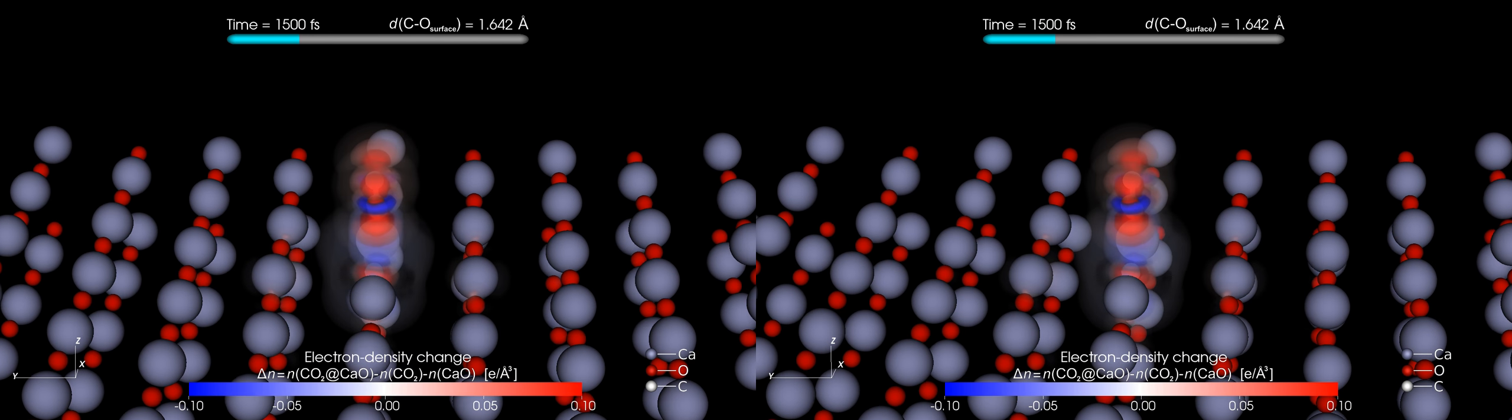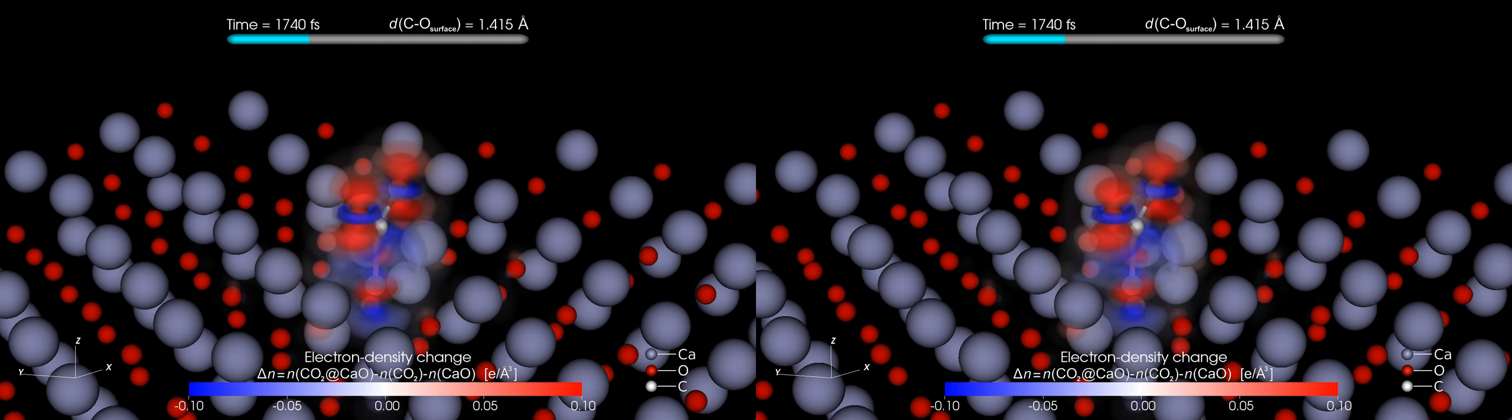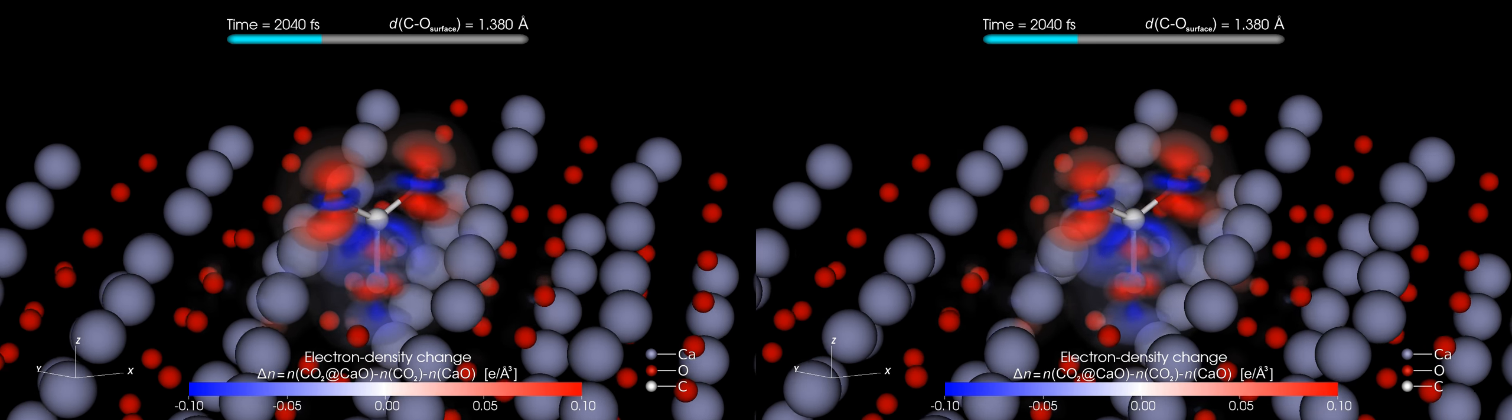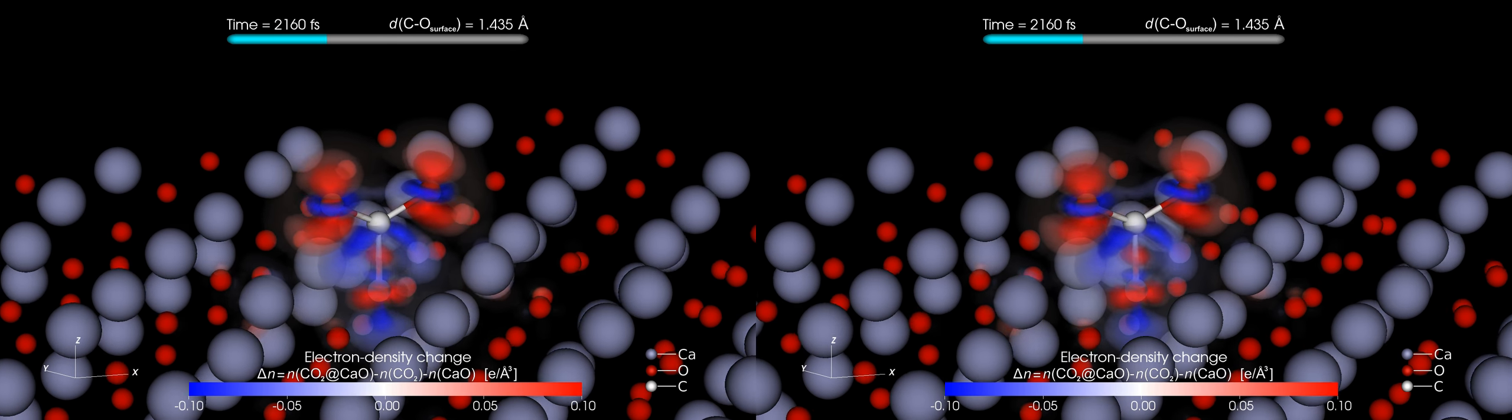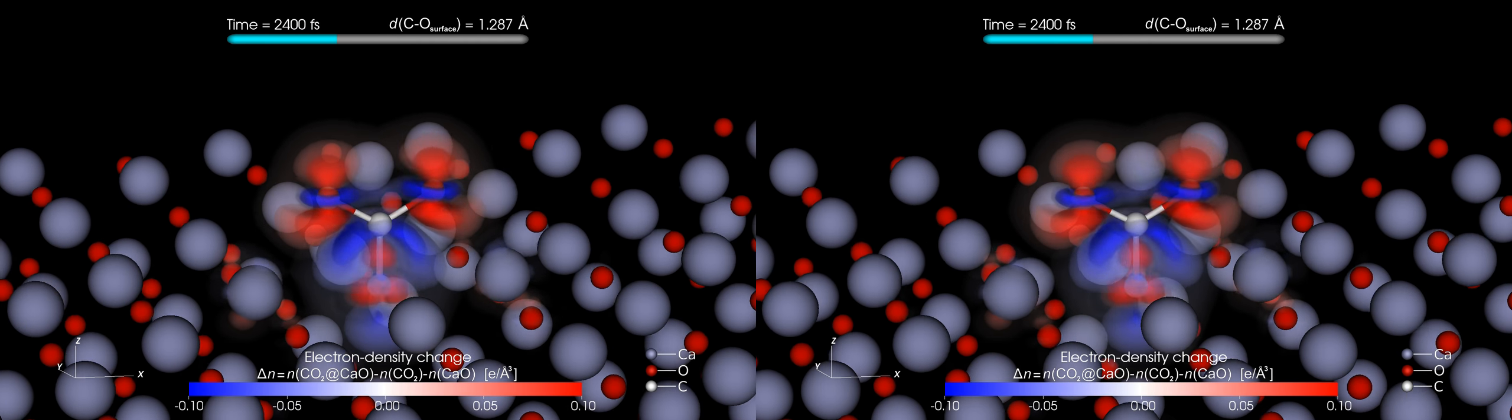The new shape of the electronic charge density indicates that the formerly very stable CO2 molecule is now ready to undergo the desired chemical reaction. The process is shown in slow motion. In reality, it happens 20 billion times faster.